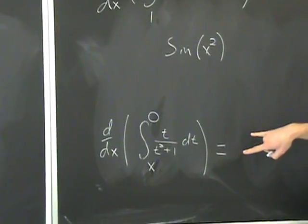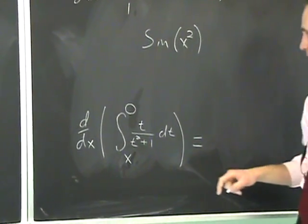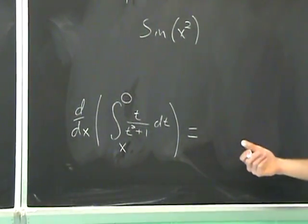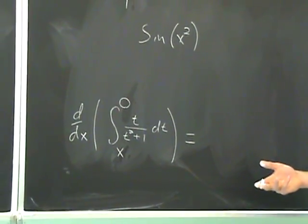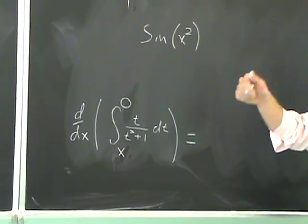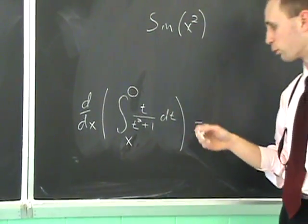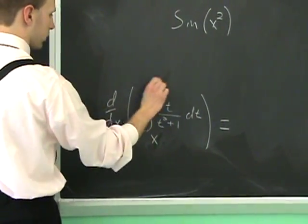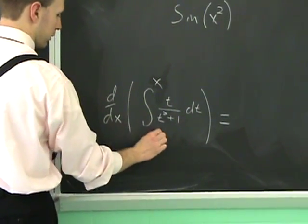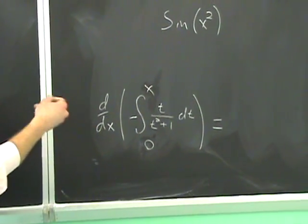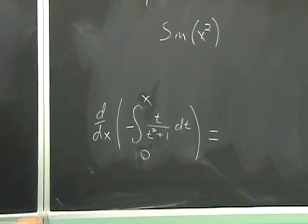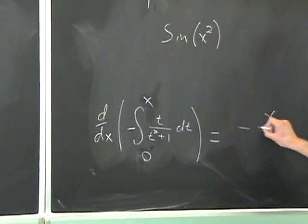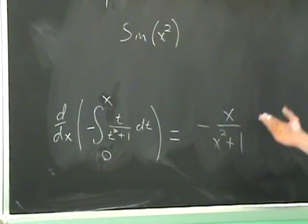The one slight hitch here is what if the upper bound is a constant and the lower bound is x? What do you do in that case? Well, it doesn't follow the rule exactly, because the fundamental theorem said that the lower bound had to be constant. But what you can do in this case is you can put the x up here, and you can put the constant down there. By doing so, that reverses the sign. Then you can apply the rule directly to this, and the derivative of this integral would just be minus x over x squared plus 1. That's it.